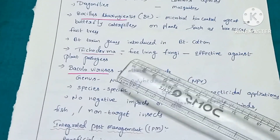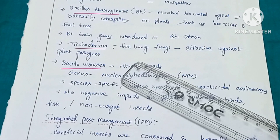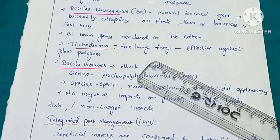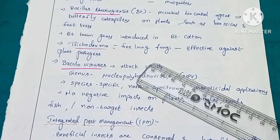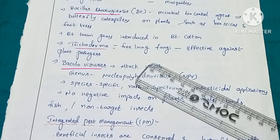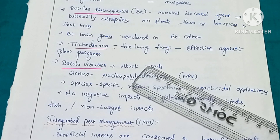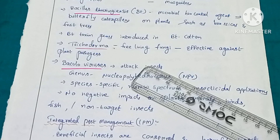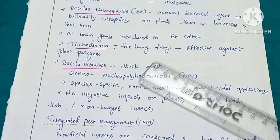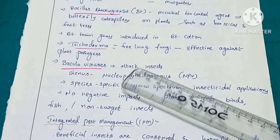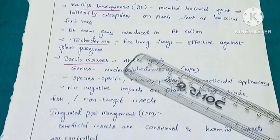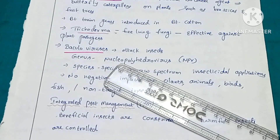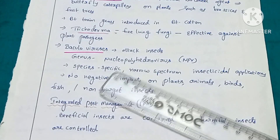Another biocontrol agent is Trichoderma. Trichoderma is a free-living fungi, common in the root ecosystem. Its function is that it effectively acts against plant pathogens. Plant pathogens include bacteria, fungi, and viruses that cause disease; Trichoderma acts as a biocontrol agent against them.